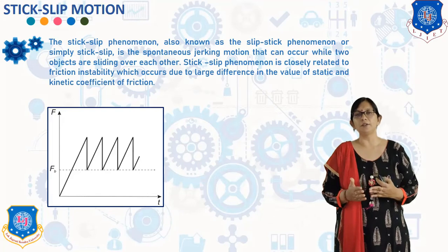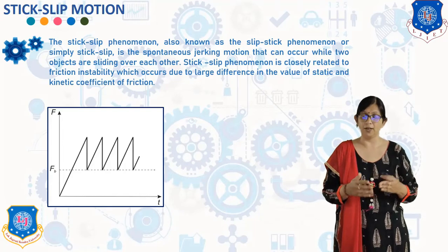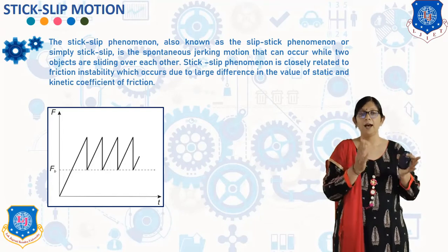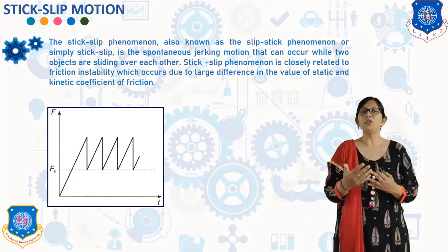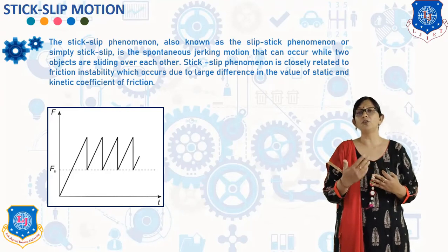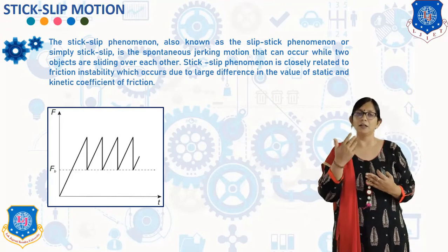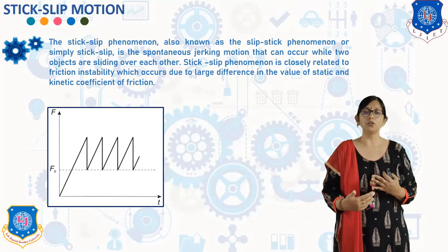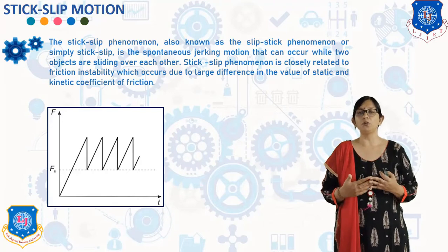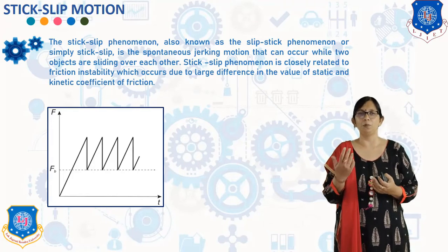If the contacting surfaces have a reasonably large difference between the coefficient of static friction and the coefficient of kinetic friction, and are subjected to a tangential force or sliding velocity which varies with time, there is a large fluctuation of frictional force. Due to this large fluctuation of frictional force, the relative motion between the two contacting surfaces is in the form of a jerk or oscillation, which is known as stick-slip motion.